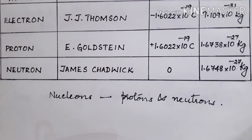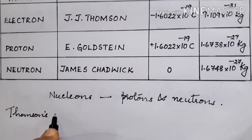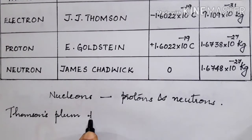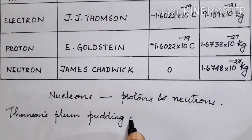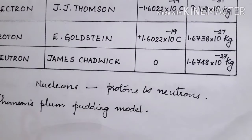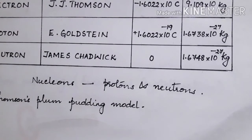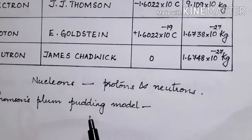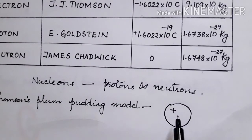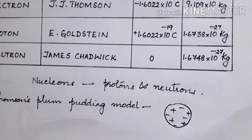Regarding how to arrange these subatomic particles in the atom, the first model proposed was Thomson's plum pudding model. This model explains the neutrality of the atom but doesn't account for other properties, so it was later discarded. In the plum pudding model, the atom is described as a positively charged sphere in which electrons are embedded unevenly, just like plums in a cake.